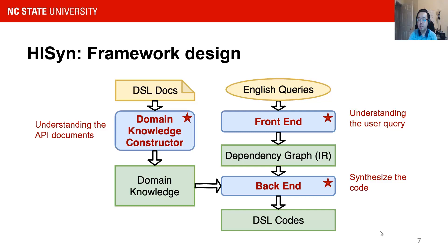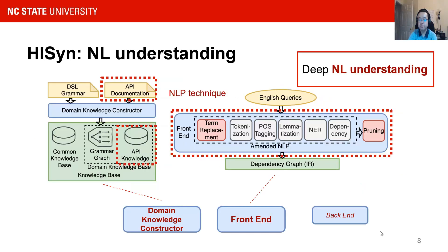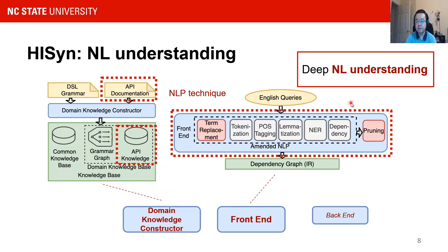Now let's look at the details of the framework to see three main features of HySing. The first main feature is deep natural language understanding. By taking modern NLP as the first-order tool, HySing automatically builds up the intermediate representation of queries and the knowledge base of APIs, extracts the key information inside natural language sentences, and prepares the foundation for the synthesizer to work on.